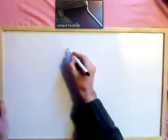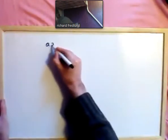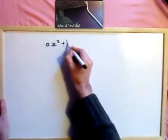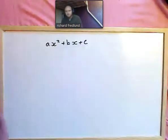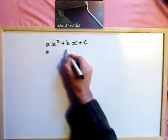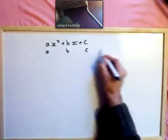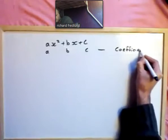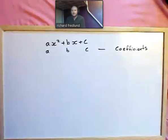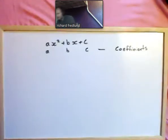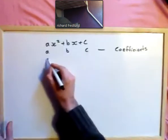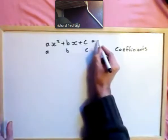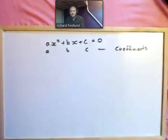In this video we're going to talk about the quadratic equation ax squared plus bx plus c. a, b and c are the coefficients of the quadratic. For it to be an equation we have to let it equal something, so it's equal to 0. And that's the standard form.